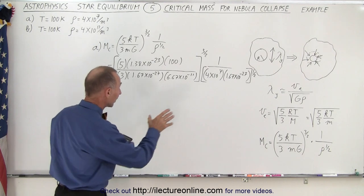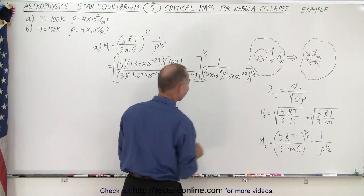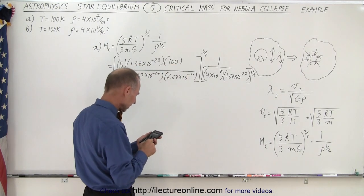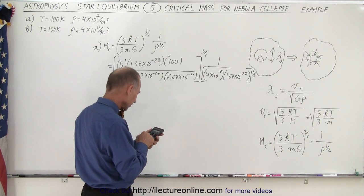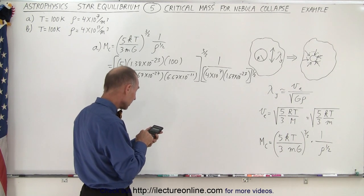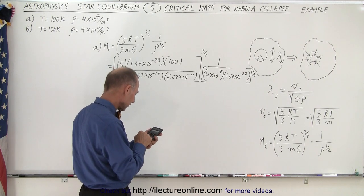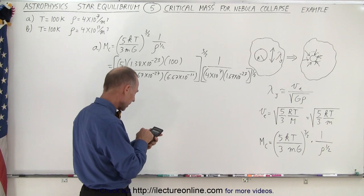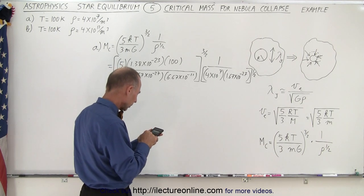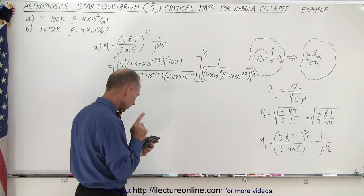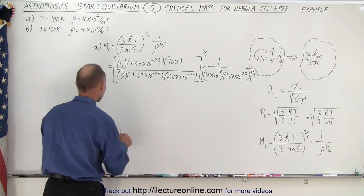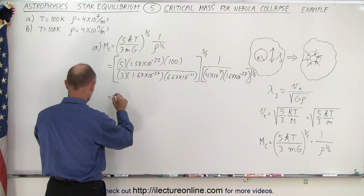Okay, and now we divide it by the square root of this. So divide by 4 e to the 7 times 1.67 e to the minus 27. We take the square root of that and equals. Now we have, this is equal to